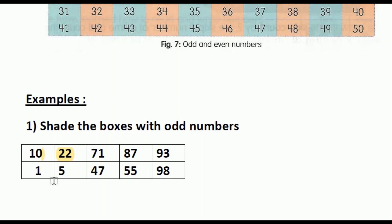After 10 comes the number 1. We already learned that 1 is an odd number, so we can shade the number 1. After 1 comes 22. Here 22 ends with the number 2 and we know that 2 is an even number, so we cannot shade 22. After 22 comes the number 5. We already learned that 5 is an odd number, so we can color the number 5. After 5 comes number 71, which ends with the number 1, and 1 is an odd number, so we can color the number 71.